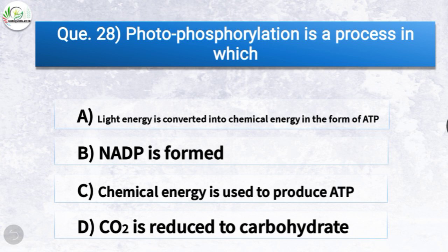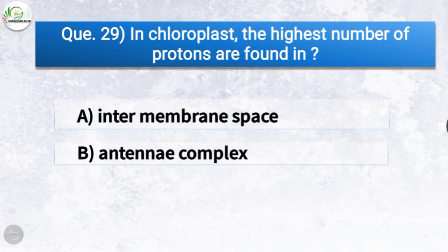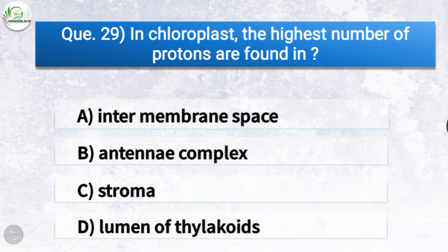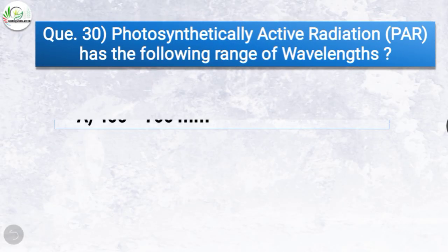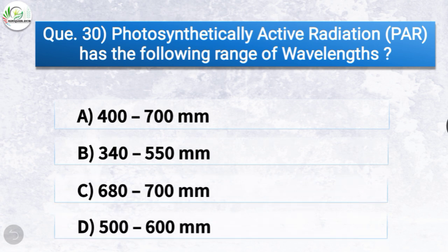Question 28: Photophosphorylation is a process in which what happens? Options: light energy is converted into chemical energy in the form of ATP, NATP is formed, chemical energy is used to produce ATP, or CO2 is reduced to carbohydrate. The correct answer is option A — light energy is converted into chemical energy in the form of ATP. Question 29: In the chloroplast, the highest number of protons are found in the lumen of thylakoids. Question 30: Photosynthetically active radiation has a wavelength range of 400 to 700 nm.